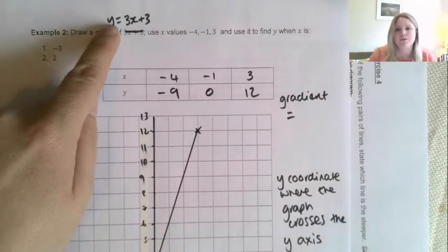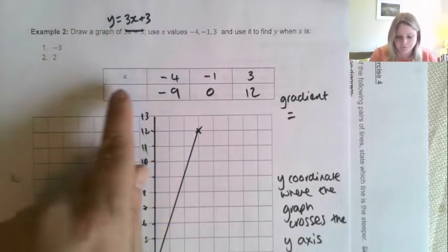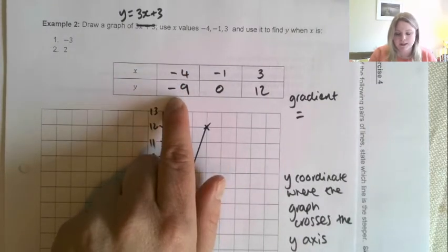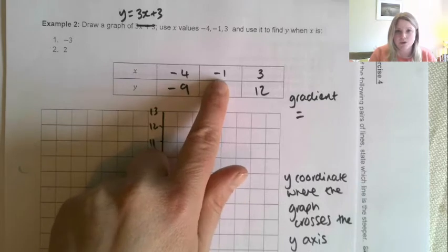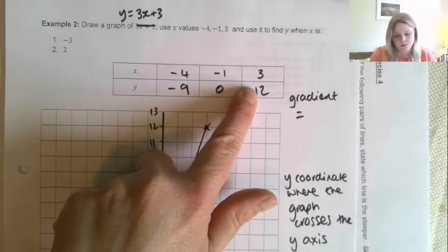So you had to draw your graph of y equals 3x plus 3 using these x values. So here's my table. Whenever x was minus 4, you should have found that y was minus 9. Whenever x was minus 1, you should have found that y was 0. And whenever x was 3, you should have found that y was 12.